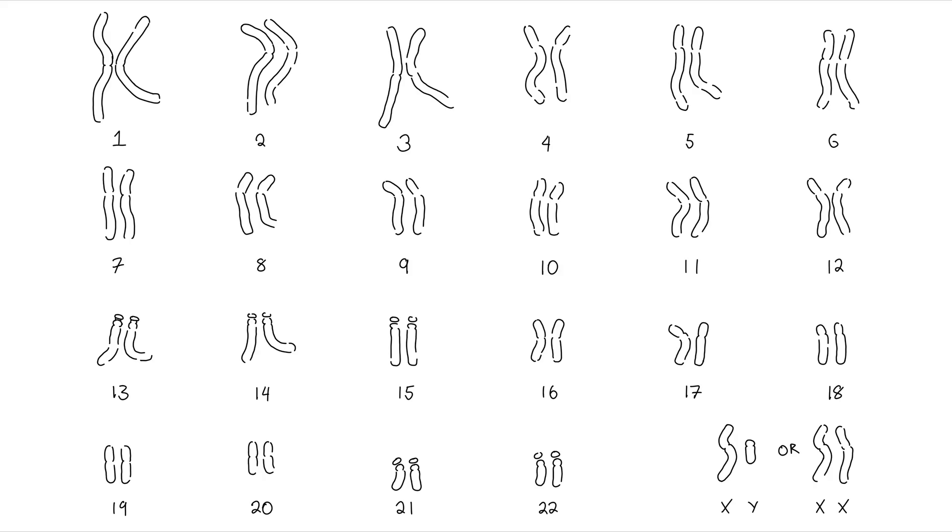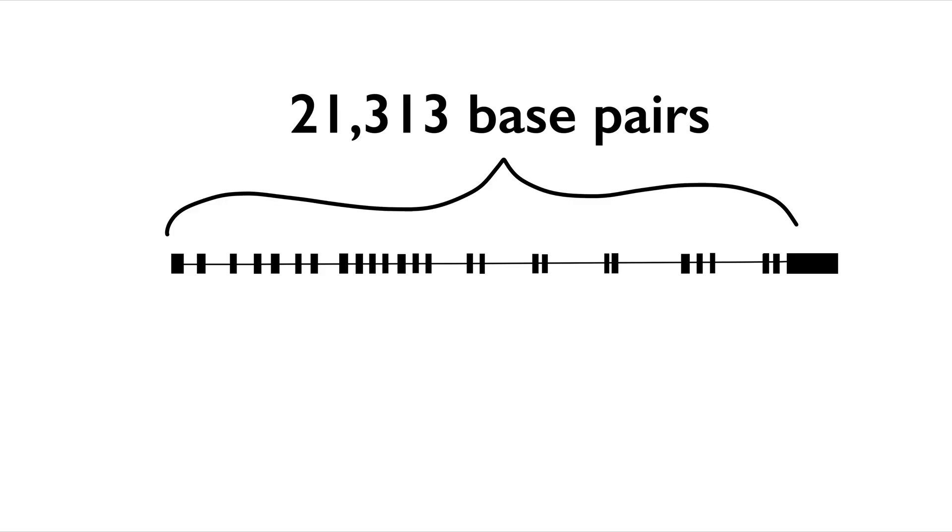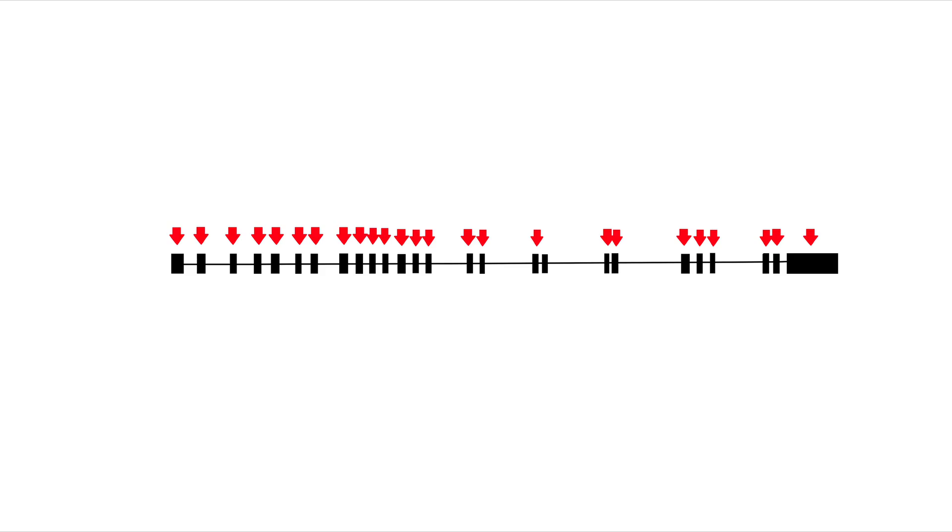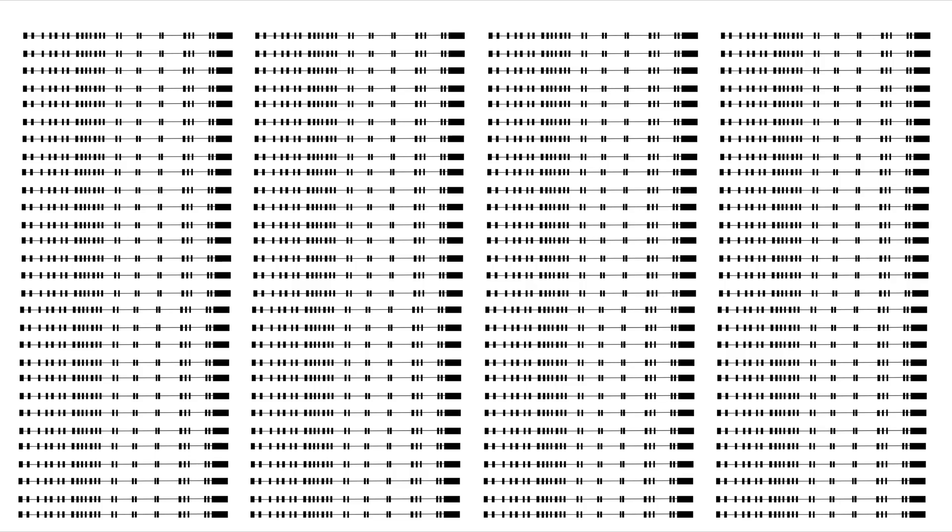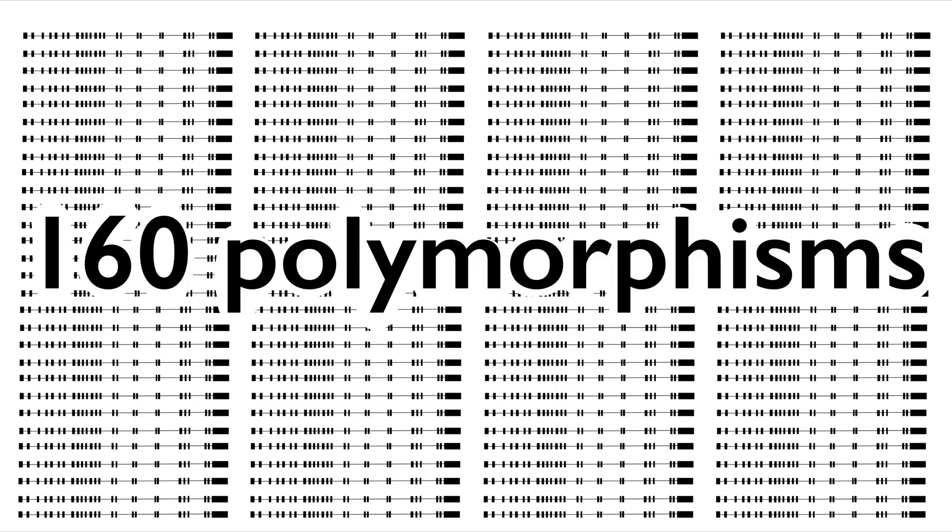The gene that encodes for the ACE is located on the 17th of the 23 pairs of chromosomes. It is 21,313 base pairs in length and consists of 26 exons and 25 introns. As of 2018, we have been able to describe more than 160 polymorphisms of this gene.